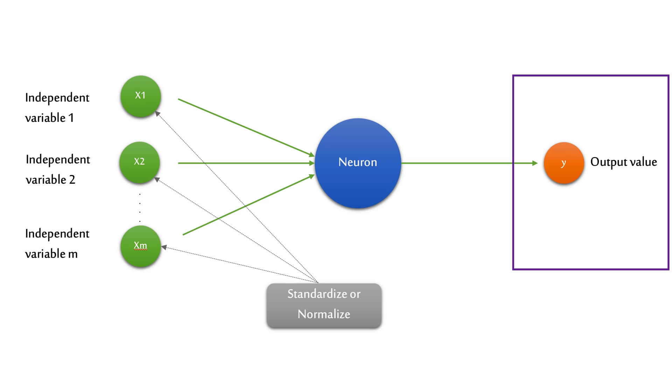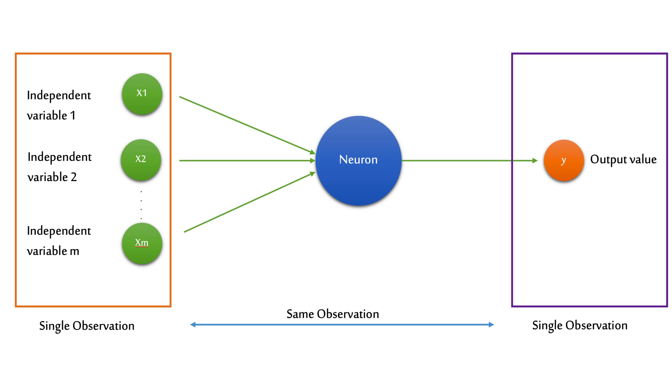Here we have the output variables. The output can be continuous — for example, price — or binary — for example, yes or no — or categorical. The output will not be just one value; it will be several output values. On the left we have a single observation as an independent variable, and on the right a single observation as output, both from the same observation.